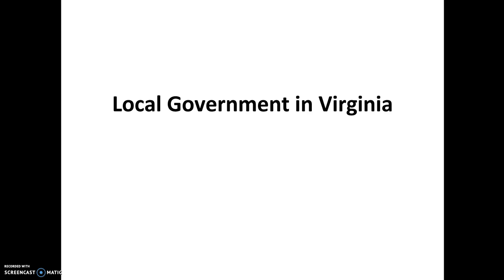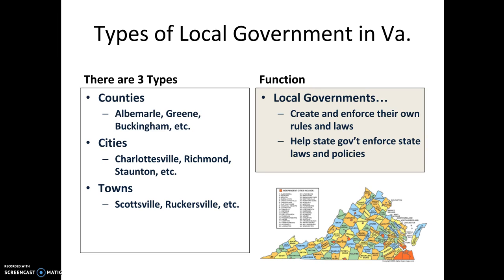Welcome, students. Let's talk about local government and how it works in Virginia. Local government — every state in the United States handles this slightly differently, but in Virginia we have three types of local government: counties, cities, and towns.